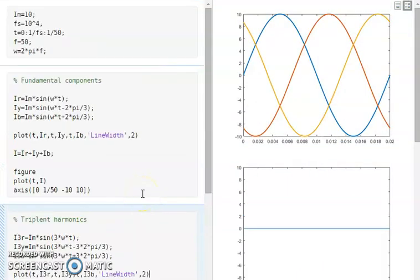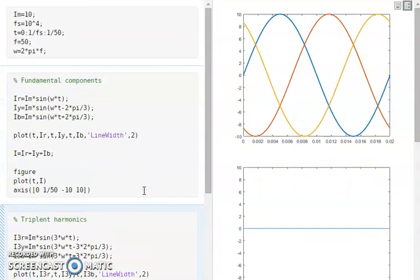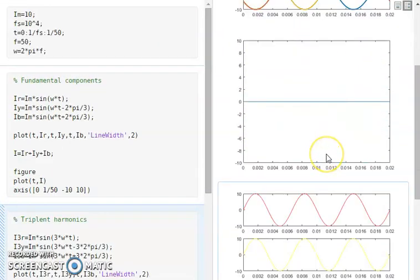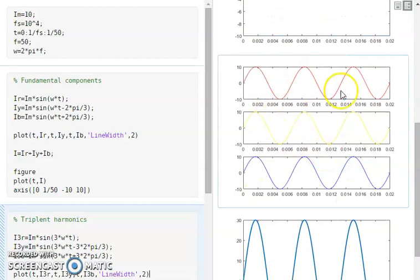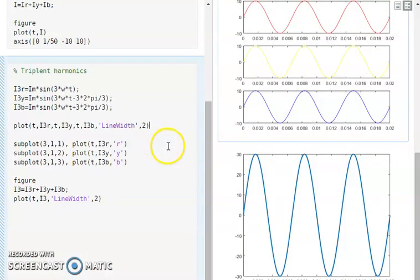You can try this code. I will put this code in the comment section. You can copy this and try it out with your MATLAB and see how the triplet and fundamental components are changing their phase position with respect to time. This will give you a fair understanding about why the triplet harmonics are being treated as more serious in power system. Hope you enjoyed this video. If you have any comments, please post it in the comment section. I will get back to you. Thank you.